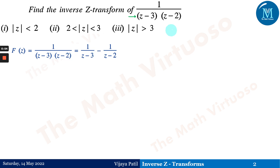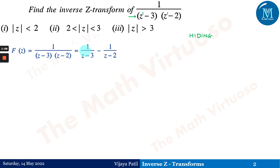As soon as we have to apply the partial fraction method to find the inverse Z transform, look at the denominator. The denominator has two brackets, so we have to separate them using the partial fraction method. Since both are linear factors, we can use the hiding method. It comes out to be 1 upon (Z minus 3) minus 1 upon (Z minus 2).